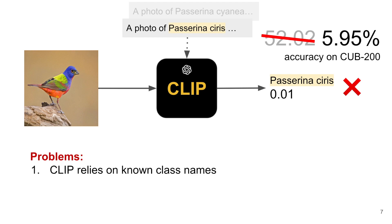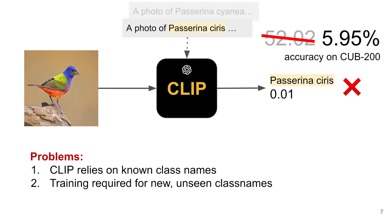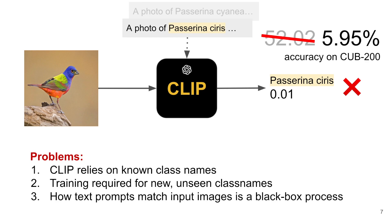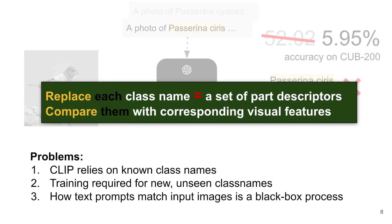CLIP relies on known class names, requires training for new unseen class names, and how text prompts match input images is a black-box process. We address these problems by expressing each class name as a set of part descriptors and comparing them with corresponding visual features from the input image when classifying.